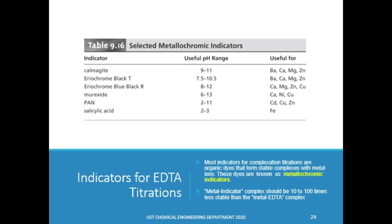For the last part of this lecture, let's discuss what indicators are used in complexometric titrations. The most commonly used indicators are organic dyes called metallochromic indicators, which change colors as they bind to metal ions in solution. The complex formed by the metal and indicator must be less stable than the metal-EDTA complex; otherwise, the EDTA won't be able to react with the metal. As seen in the given table, the effectiveness of the indicators is also dependent on pH. Therefore, the chosen indicator must also be applicable to the pH condition required by the metal-EDTA reaction.